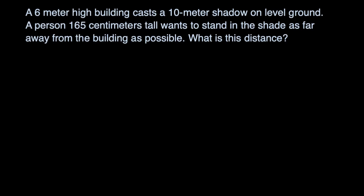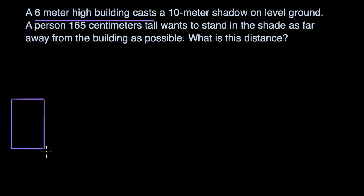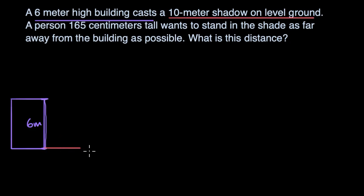Let's first think about the building. So a six meter high building — maybe this is the building right over here. This distance right over here is six meters. It casts a 10 meter shadow on level ground, so that distance right over here is 10 meters. We're assuming that the sunlight is coming like this.